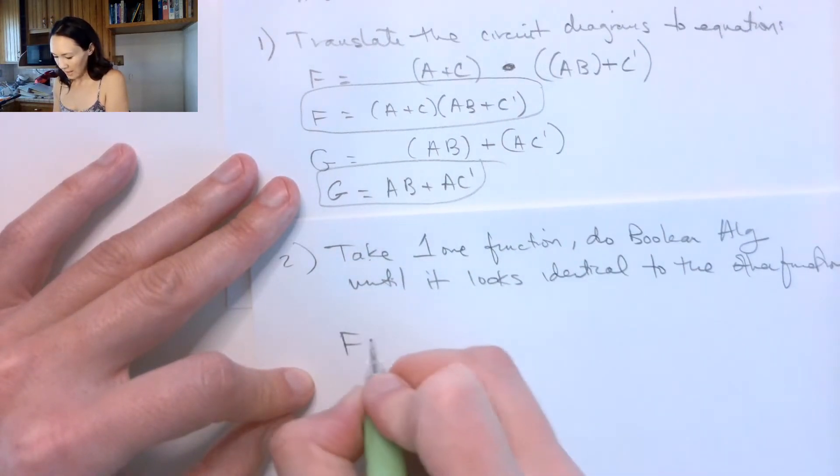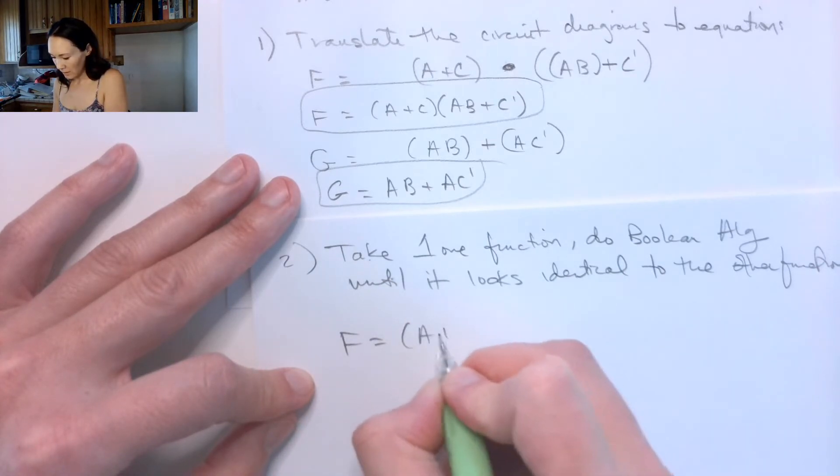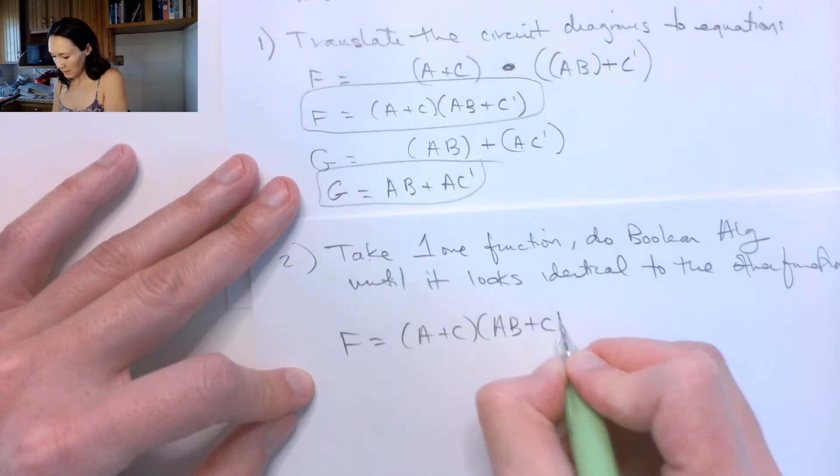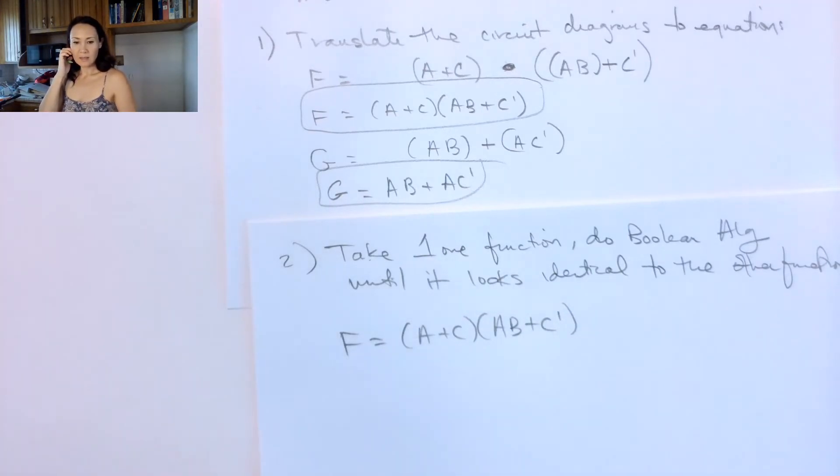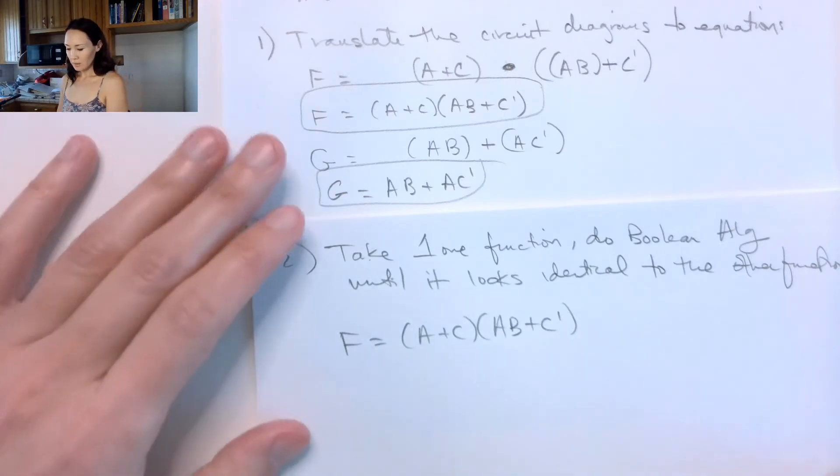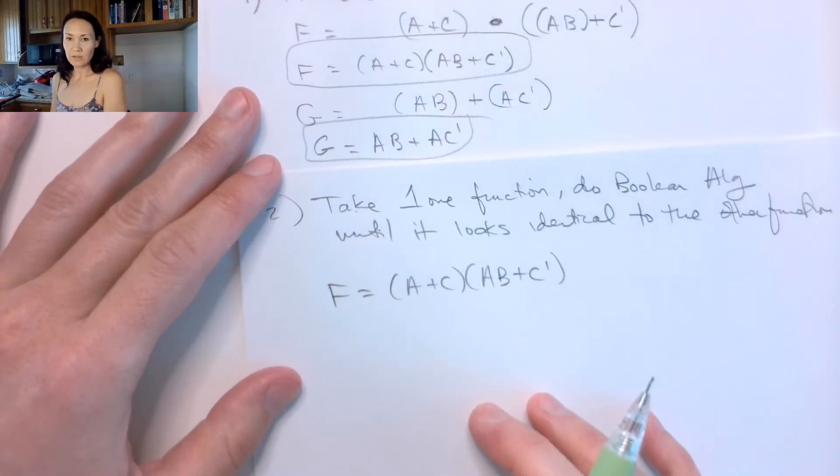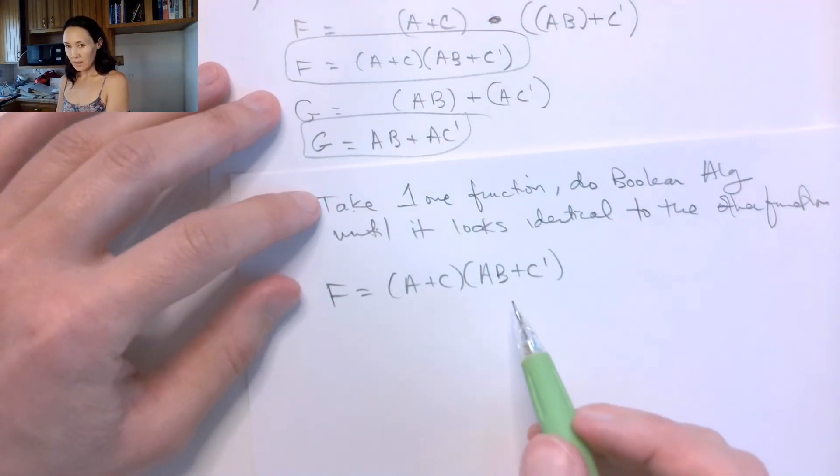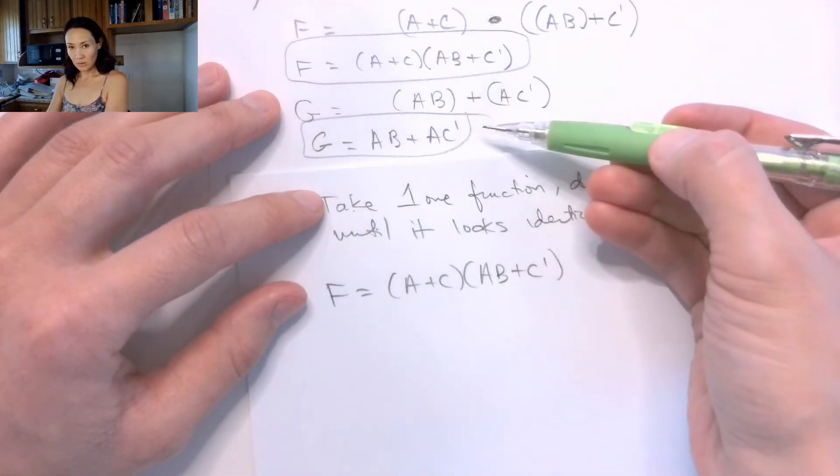So I'm going to take F. F is (A+C) · (AB+C'). And now I'm going to just do algebra on just this F function. And I know I'm done when after all my steps I get something that looks just like G.